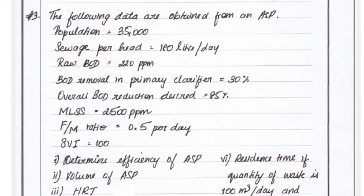The problem is the following data were obtained from ASP, that is activated sludge process. The population is 35,000, sewage per head is 180 liters per day, raw BOD that is incoming BOD is 220 parts per million, BOD removal in primary clarifier is 30%, overall BOD retention desired is 85%, and MLSS equals 2500 parts per million.